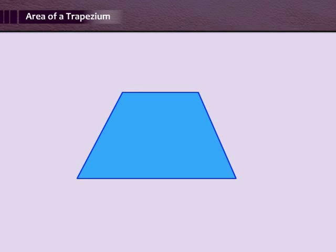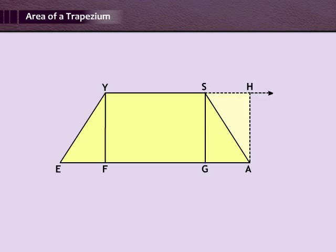A quadrilateral in which only one pair of opposite sides are parallel is called a trapezium. Look at this trapezium EASY.